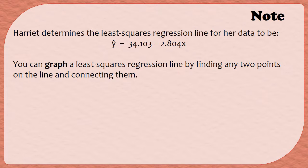Remember that Harriet determined the least squares regression line to be ŷ = 34.103 - 2.804x. So this is the equation that we're going to be graphing in a moment.